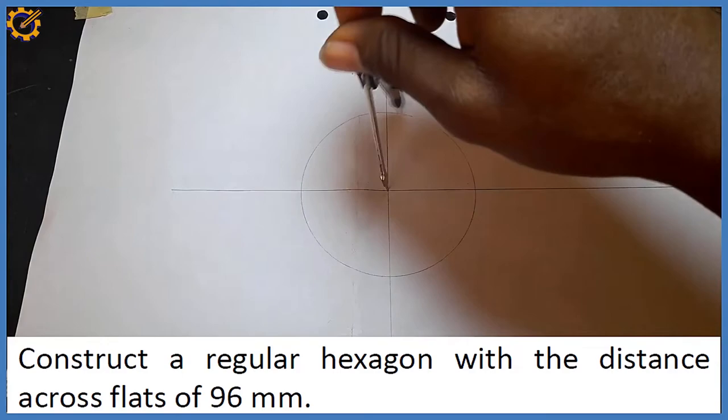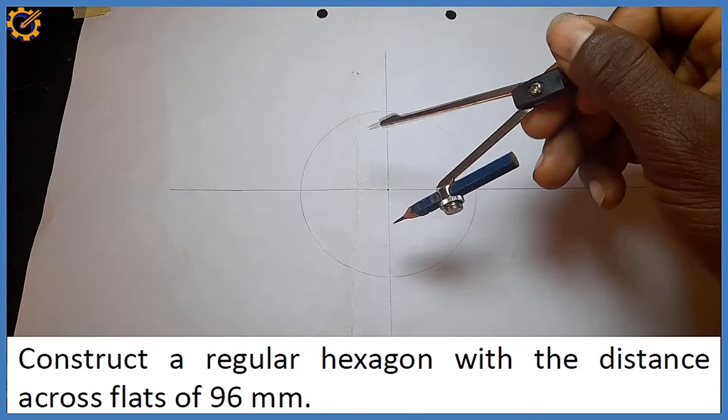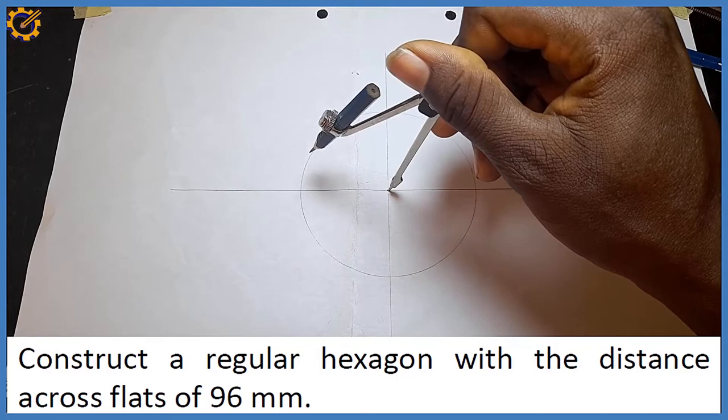Ensure the lines you've drawn so far and this circle are drawn with thin line. And for you to swivel your compass the way I'm doing it, ensure you use a short pencil for your compass. If you use a long pencil, you won't be able to swing your compass properly.